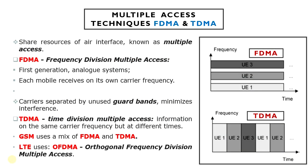The techniques described so far work well for one-to-one communication. In a cellular network, however, a base station has to transmit to many different mobiles at once. It does this by sharing the resources of the air interface in a technique known as multiple access. Mobile communication systems use a few different multiple access techniques, two of which are shown in the figure.